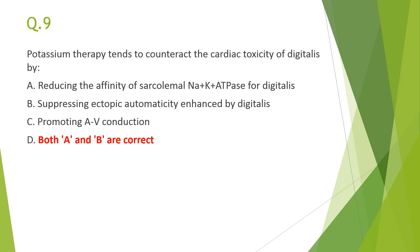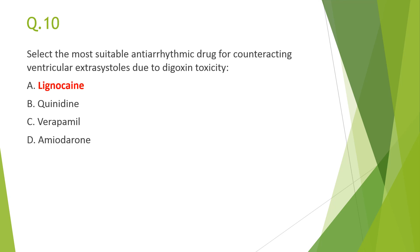Question 10: the most appropriate antiarrhythmic drug for counteracting ventricular extrasystoles due to digitalis toxicity is lignocaine — it is the drug of choice for ventricular extrasystoles or ventricular tachycardia caused by digitalis toxicity, while atropine is considered for AV block.